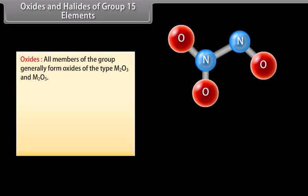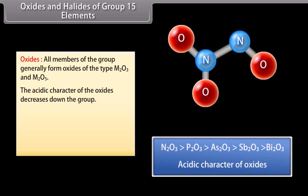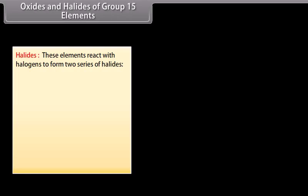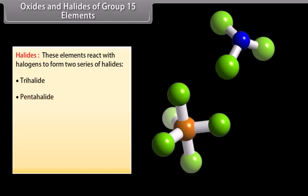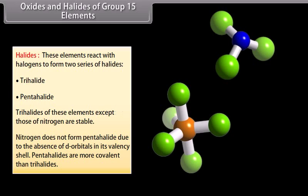All members of group 15 generally form oxides of the type M2O3 and M2O5. The acidic character of the oxides decreases down the group: N2O3, P2O3 and As2O3 are acidic; Sb2O3 is amphoteric; Bi2O3 is basic. These elements react with halogens to form trihalides and pentahalides. Trihalides are stable, but nitrogen does not form pentahalide due to the absence of d-orbitals in its valence shell. Pentahalides are more covalent than trihalides.